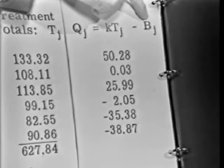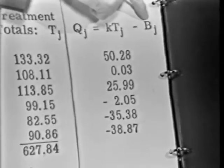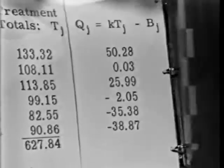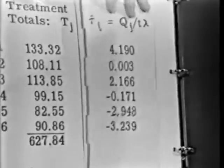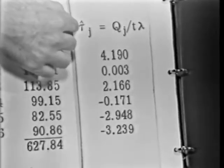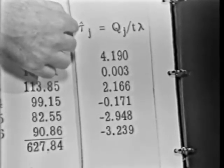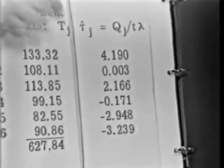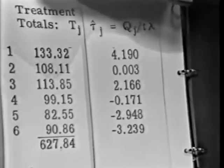After you get Q sub j, it's not a very hard calculation to get the little tau sub j's. These would be the quantities which you would find in your mathematical model. This is tau sub j in the mathematical model by evoking this little equation.